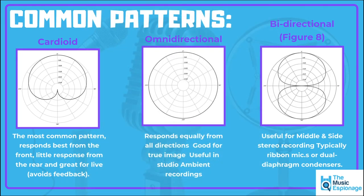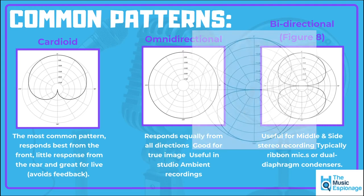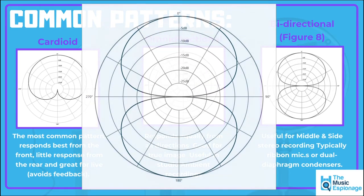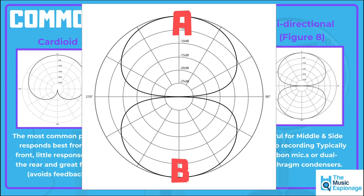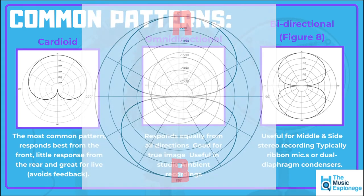Another really common one is bidirectional. This picks up from the front and the back of the microphone but rejects sound from the sides. Imagine two people doing an interview: person A is at zero degrees and person B is at 180 degrees. What it's going to do is reject sound from 90 and 270 degrees — from the left and the right of those two people speaking.